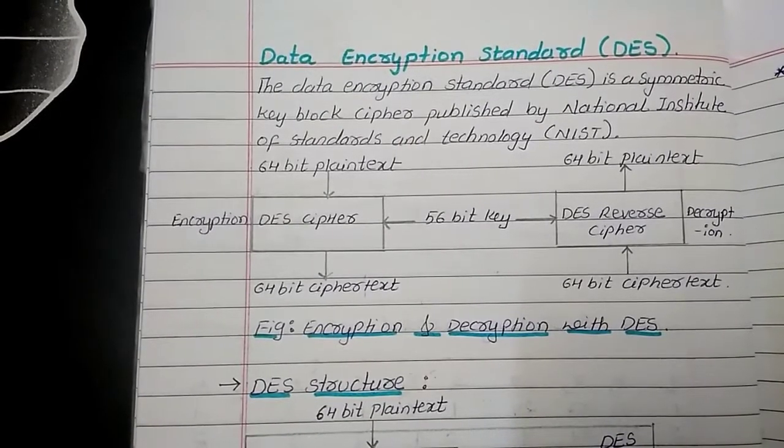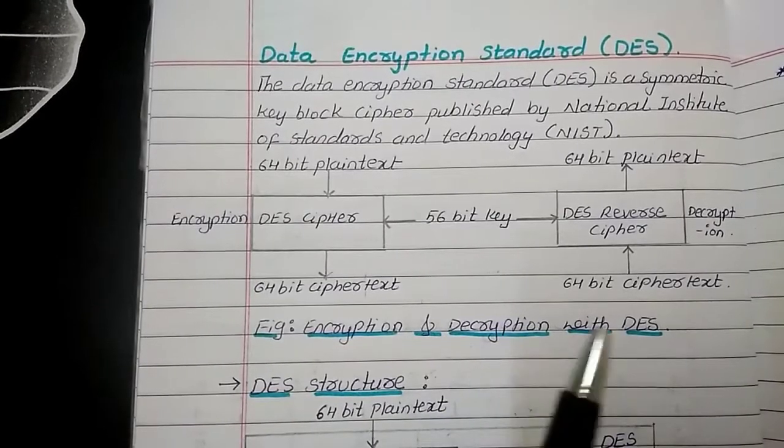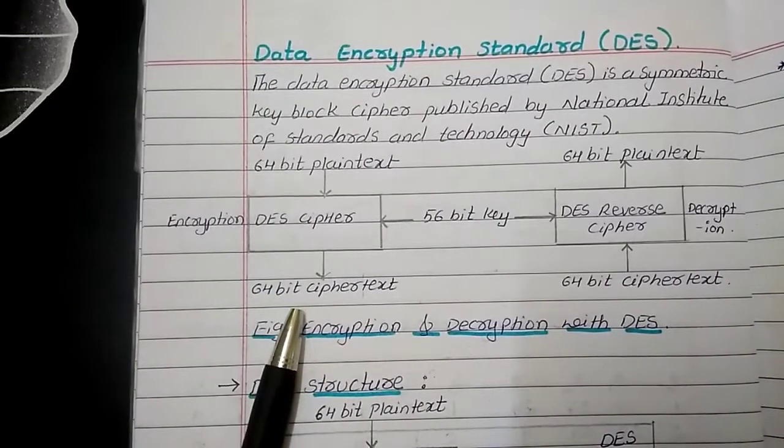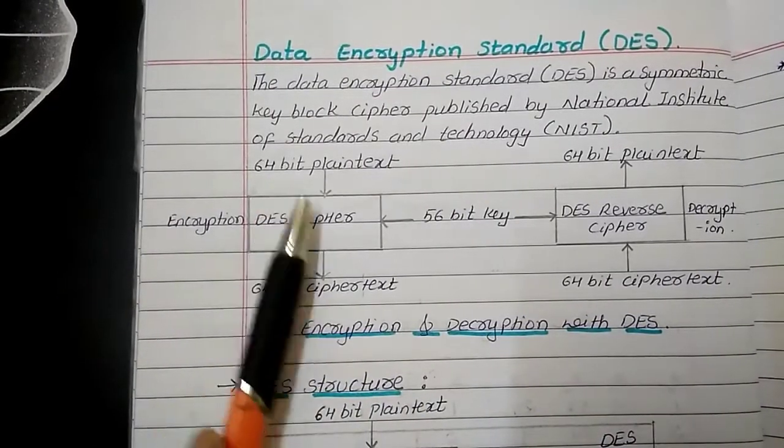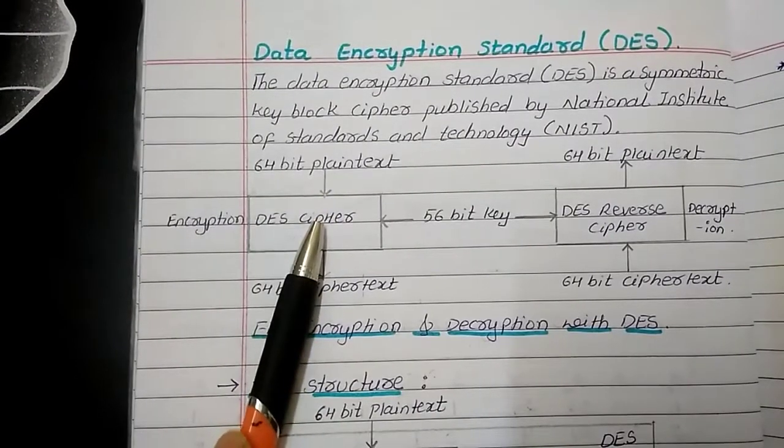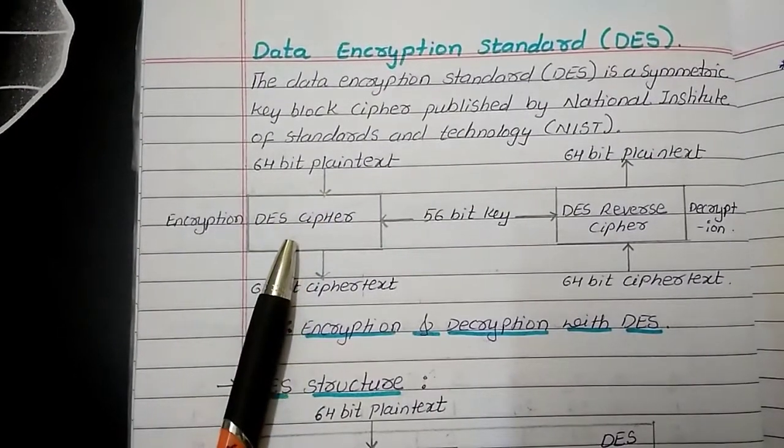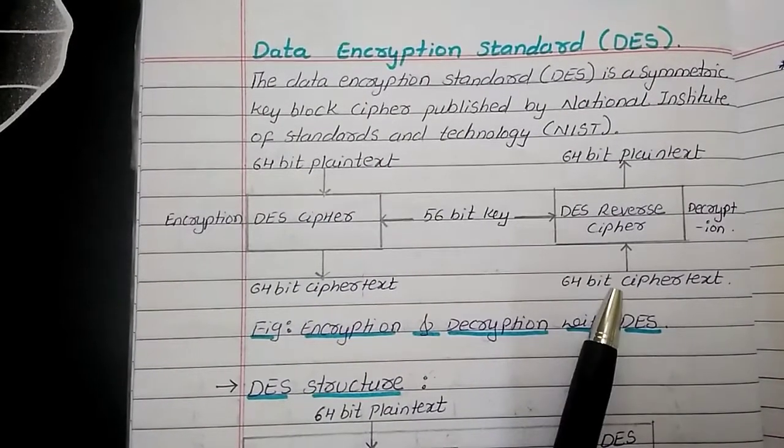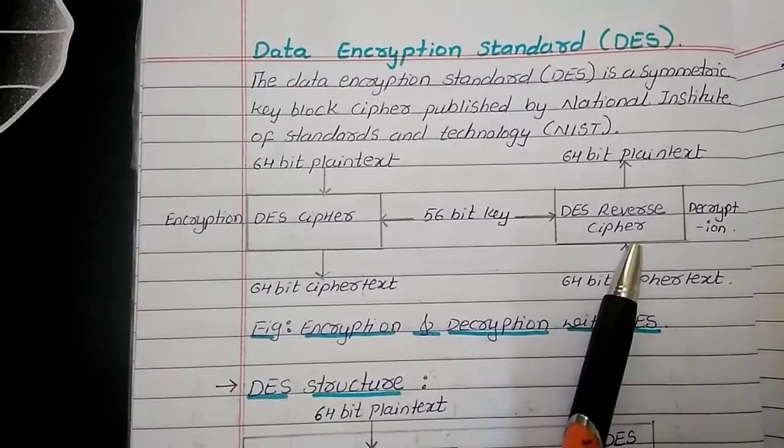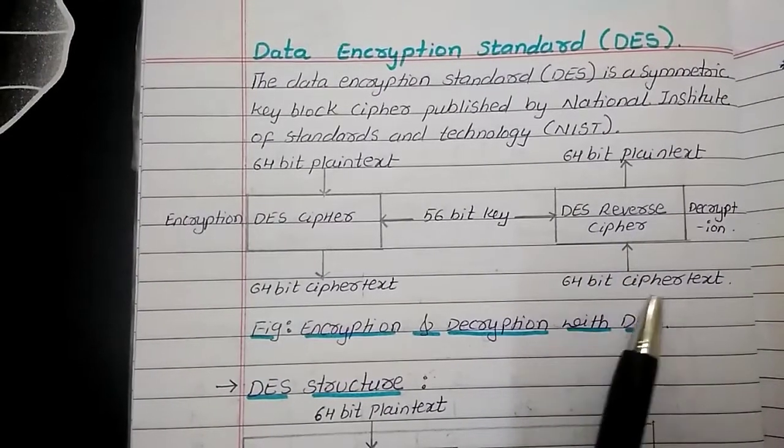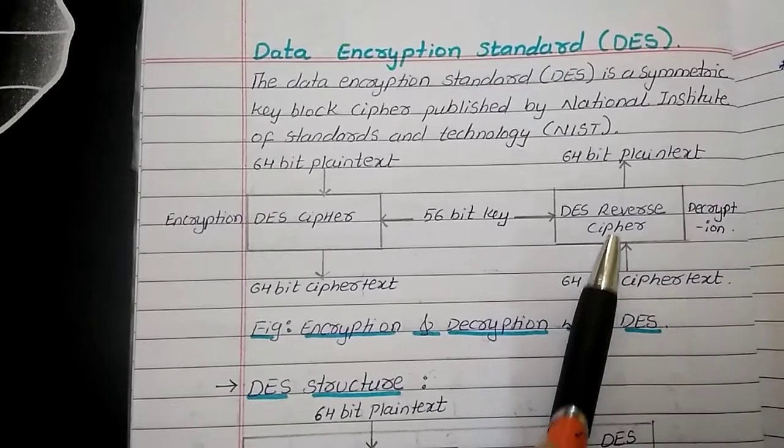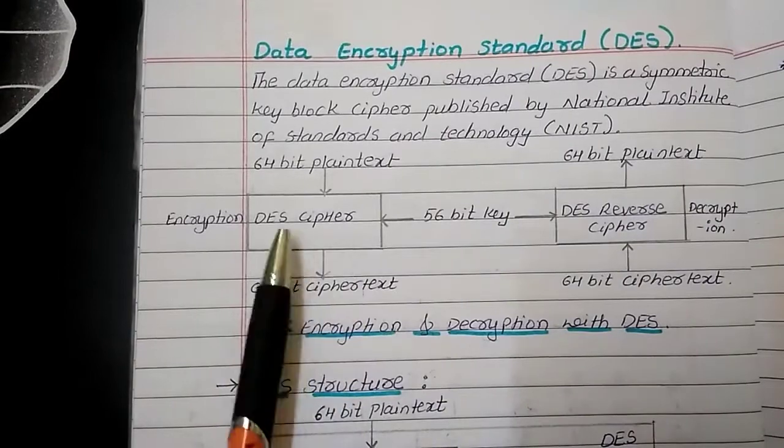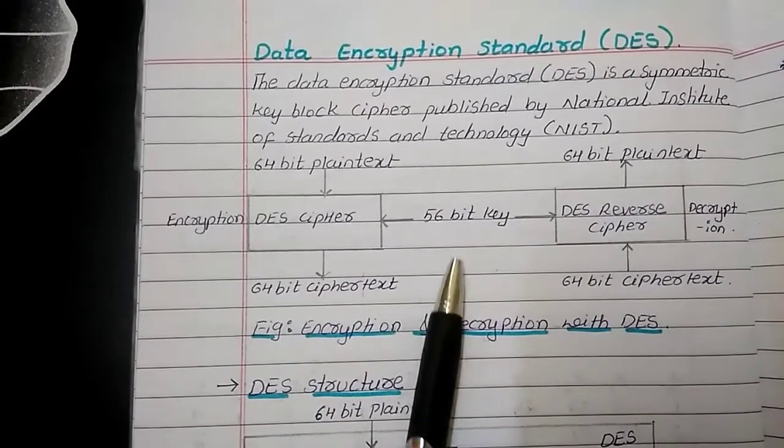If we see the encryption and decryption process with DES, as far as encryption is concerned, the DES cipher is accepting 64-bit plaintext applied to DES cipher and it is going to give you 64-bit ciphertext as the output. On the decryption side, the DES reverse cipher is accepting 64-bit ciphertext and after decryption process, it is going to give you output of 64-bit plaintext. In both the operations, we are using 56-bit key.